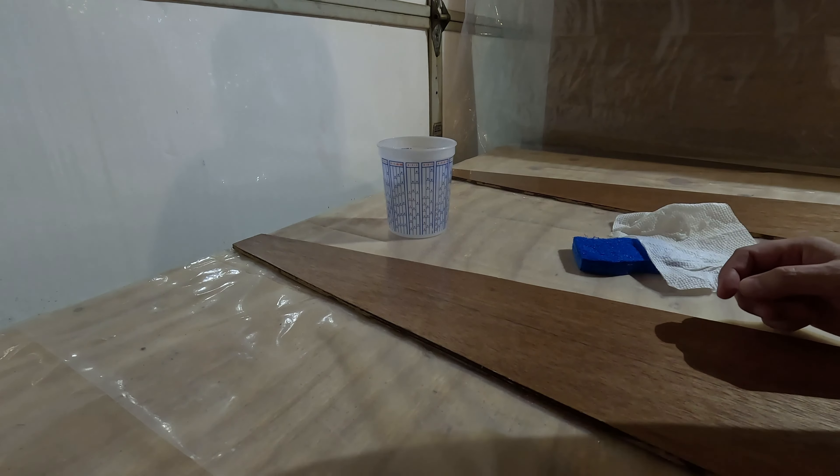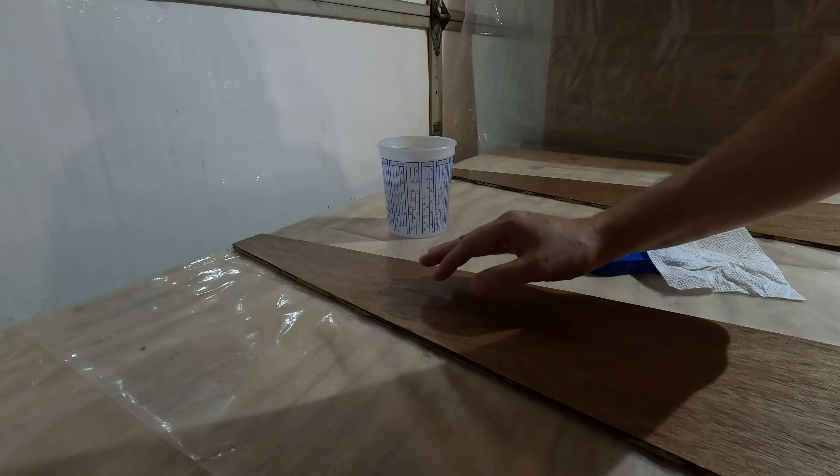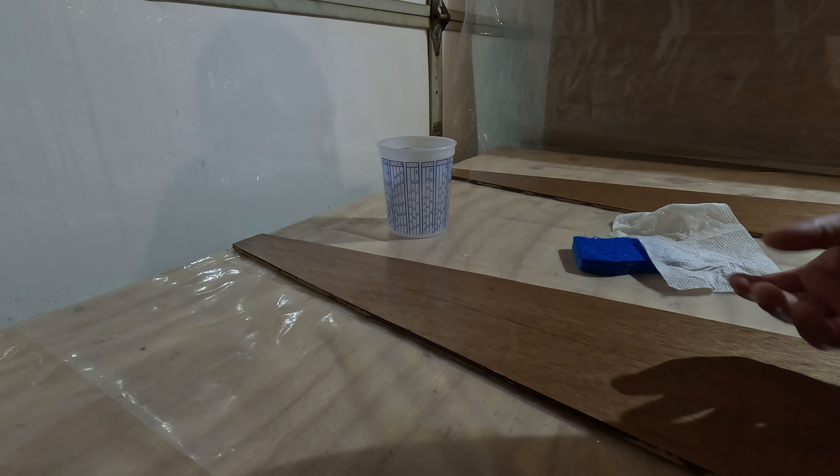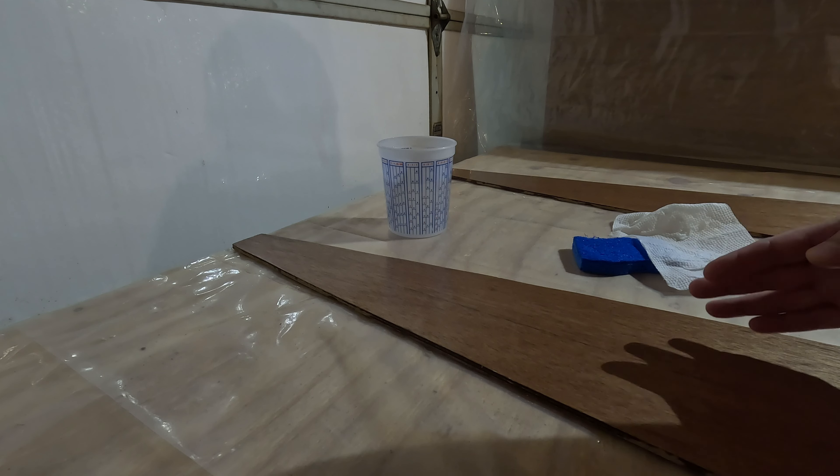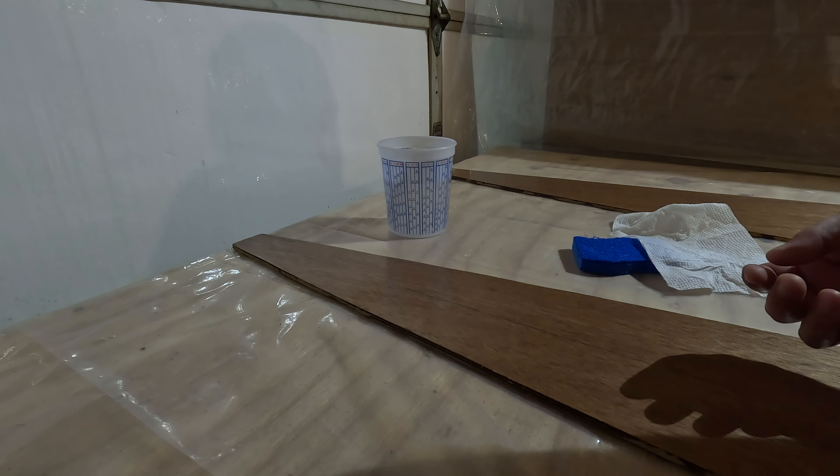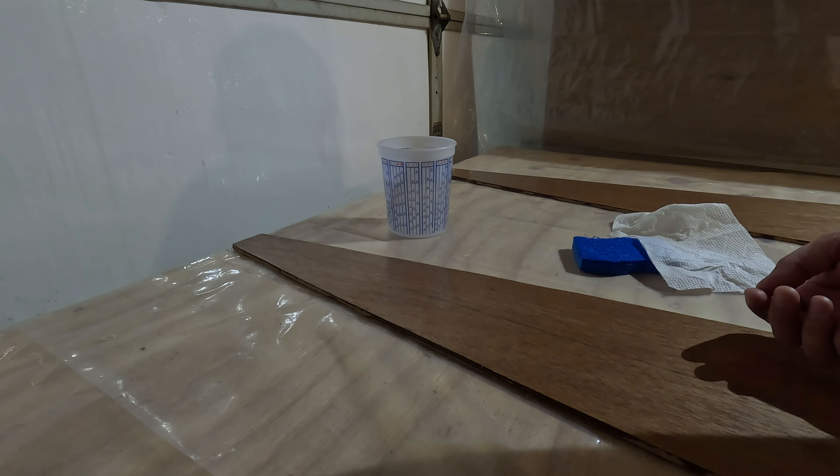And in addition to that, the peel ply will also leave the surface already in a rough texture and you don't need to do any sanding. It's ready to go right away with another layer of epoxy. So I'm not doing that because it just seems a waste to me to have to throw away all that peel ply. It's a single use product.